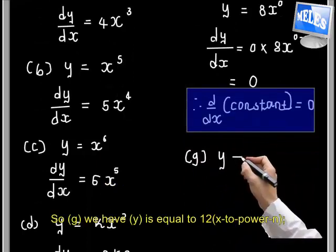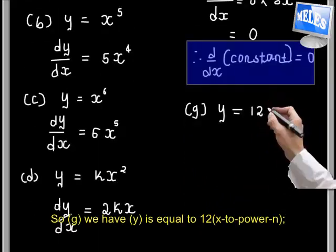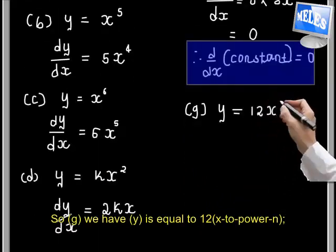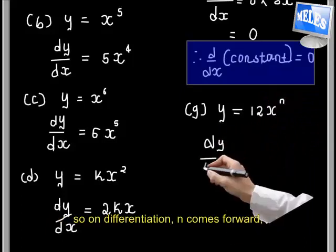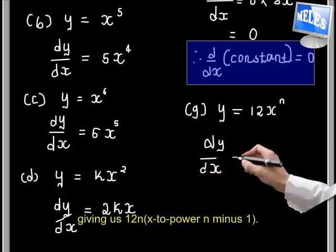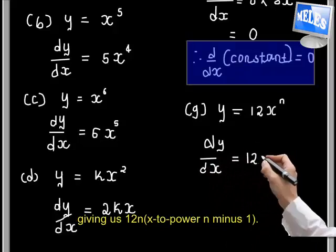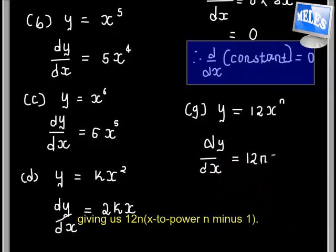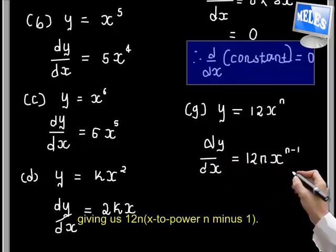So in g, we have y equal to 12x to the power of n. On differentiation, n comes forward giving us 12nx to the power of n minus 1.